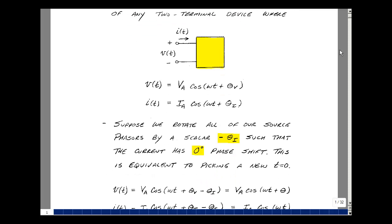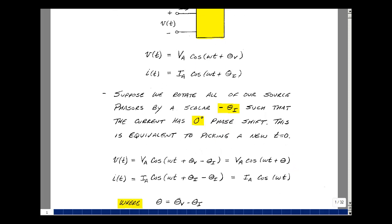Now suppose that we rotate all of our source phasors by a scalar equal to minus θ_i. This effectively moves all phasors by the same amount, resulting in our current having a phase angle of zero. This is effectively the same as changing the definition of t equals zero, which is an arbitrary selection. So now V of t equals V_a cosine of (ω t + θ_v − θ_i), and we'll call that difference theta. The current is now simply I_a cosine of ω t.